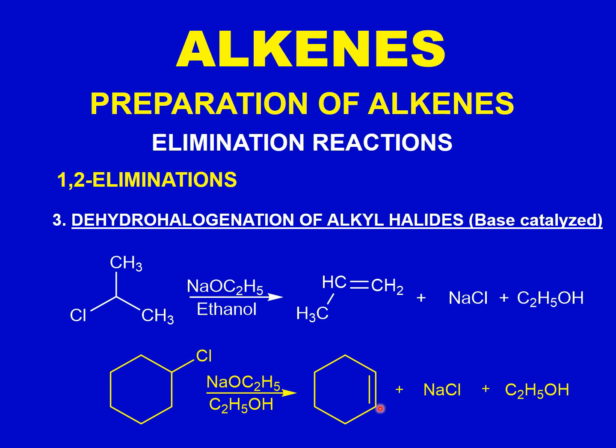These are some of the reactions through which you can prepare alkenes in the laboratory. All of them are elimination reactions falling under the category of 1,2-elimination or beta elimination. We have discussed dehydrogenation of alkanes, dehydration of alcohols, and dehydrohalogenation of alkyl halides. In the next lecture we will talk about some of the chemical reactions of alkenes. Thank you so much for now.